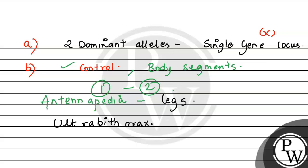genes result in extra wings or legs in the wrong places. So this option is correct.